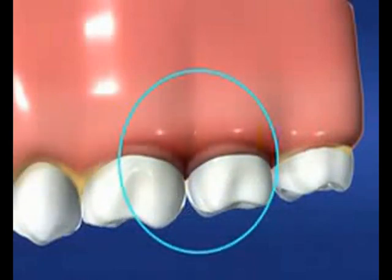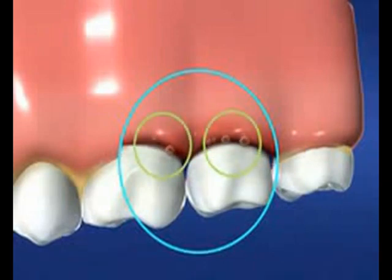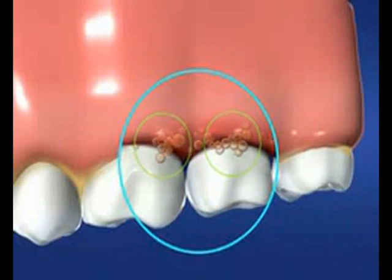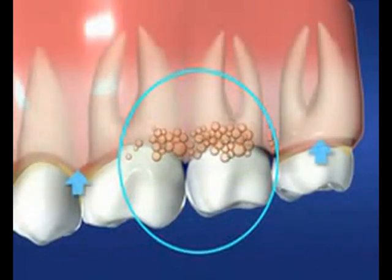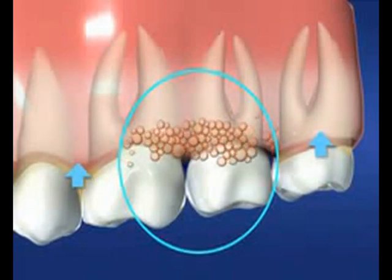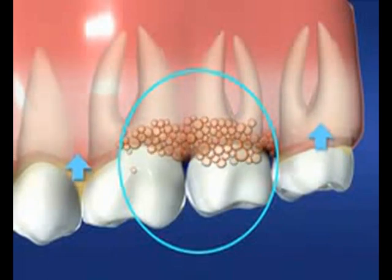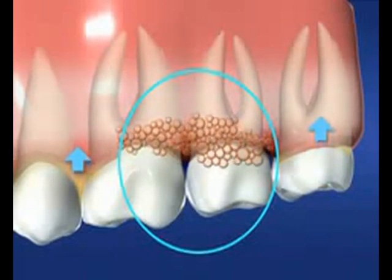The irritated gum tissue can separate from the teeth and form spaces called pockets. Bacteria move into the pockets, where they continue to promote irritation. Left untreated, the process can continue until the bone and other tooth-supporting tissues are destroyed.